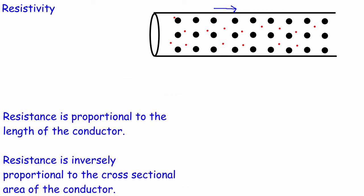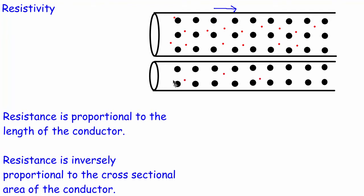Not only can we change the length of a conductor, we could also change the cross-sectional area of the wire. Here we've got a thin wire compared to a thick one. In a thick wire, the electron has a number of routes it can take between the ions. For the thin wire, the number of routes is less — it's got less room to move, so it's more likely to interact with the ions. Therefore the resistance is higher for a thin wire compared to a thicker wire. Resistance is inversely proportional to the cross-sectional area.